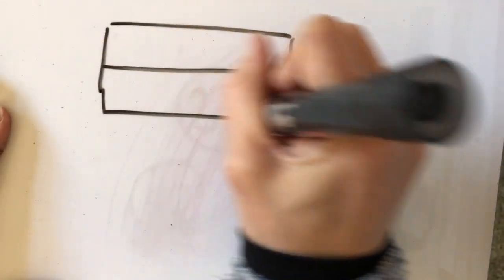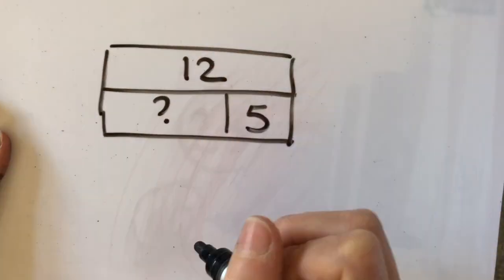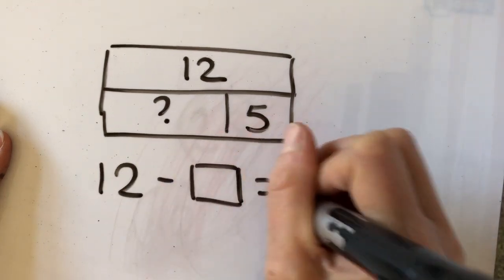And the final way it can be used with addition and subtraction, same example, so if I know that that's 12 and I know that's 5 but this is my unknown, so 12 take away something gives me 5.